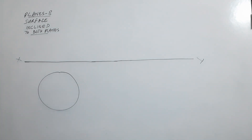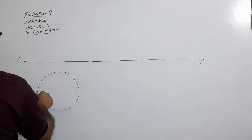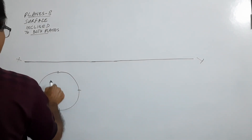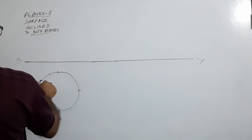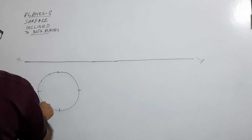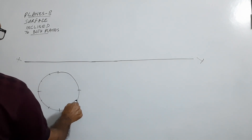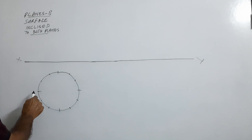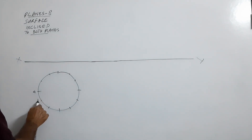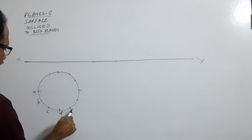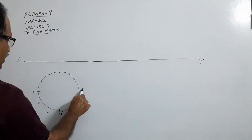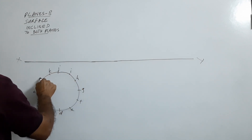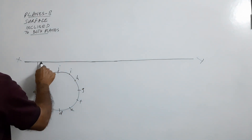For the plan of the circular lamina, you must always divide the circle into 12 equal parts for accuracy — no compromise. Label the points A, B, C, D, E, F, G, H, I, J, K, L. Then project the elevation.